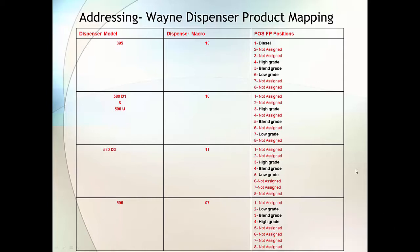On this slide, you can see on the left we have the model dispenser and on the right we have the POS fueling point positions. The grade to hose mapping in the point of sale must match how it's mapped in the dispenser. Each model type of the Wayne Blender dispenser differs.